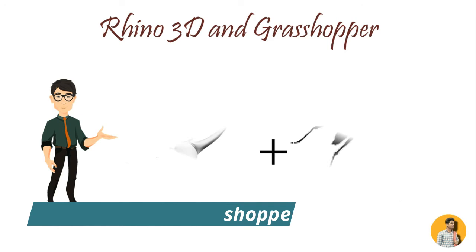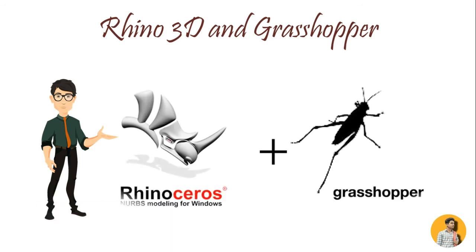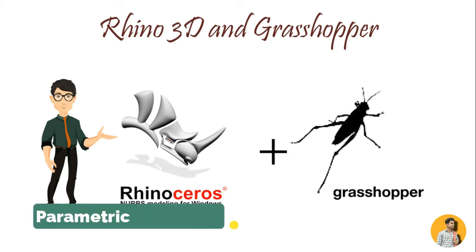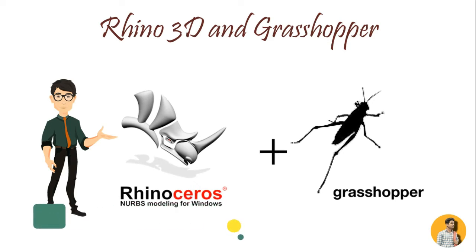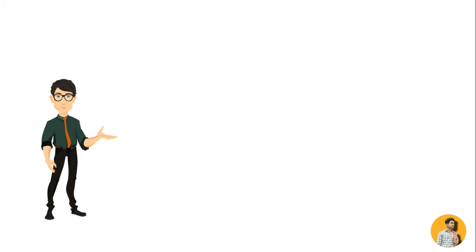Fifth is Rhino 3D and Grasshopper. Rhino 3D is the way to go because of the current industry trend towards parametric architecture. It is important for rendering complex curved surfaces. Additionally, Grasshopper, a Rhino plugin, can be used to create an endless variety of inventive structures.